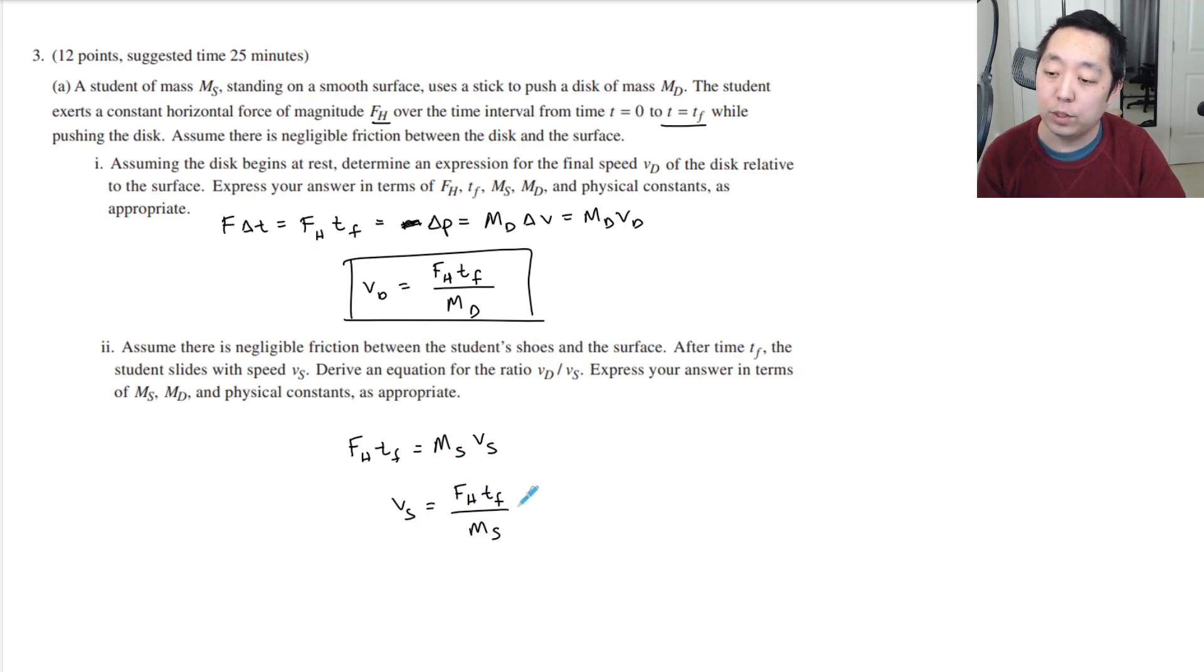Therefore you can do the ratio. What is VD over VS? These FHTF terms are going to cancel, and then you just flip that. It's MS over MD. You could have done conservation of momentum, but either way you should get VS equals this, maybe with a negative sign, but we're just trying to find the speed.